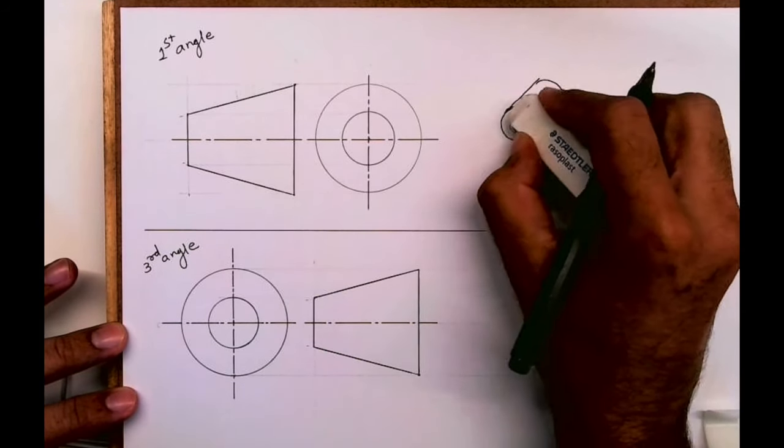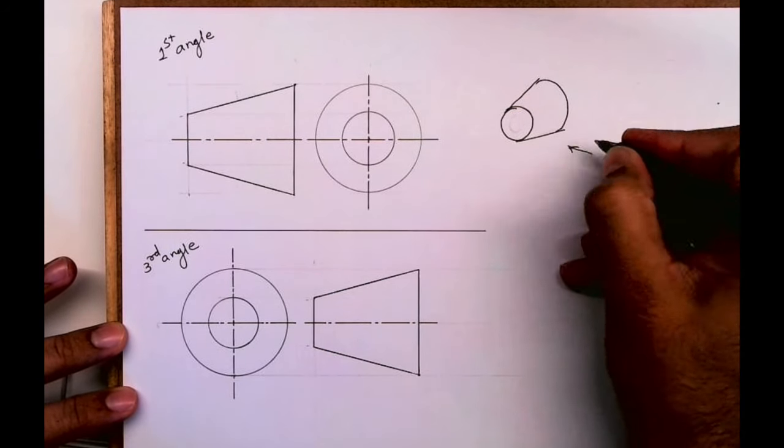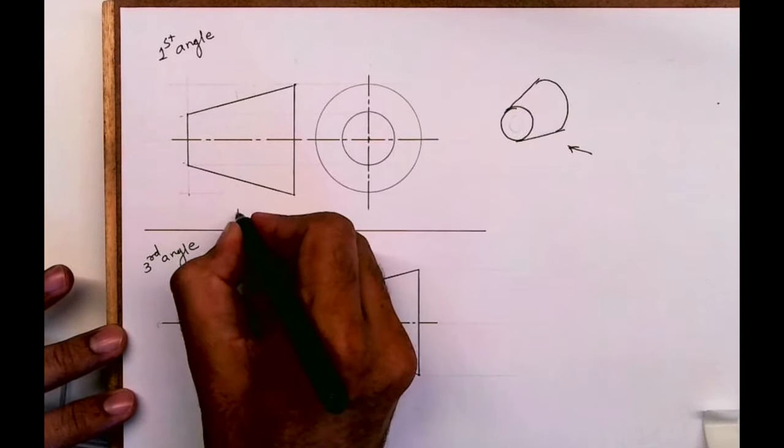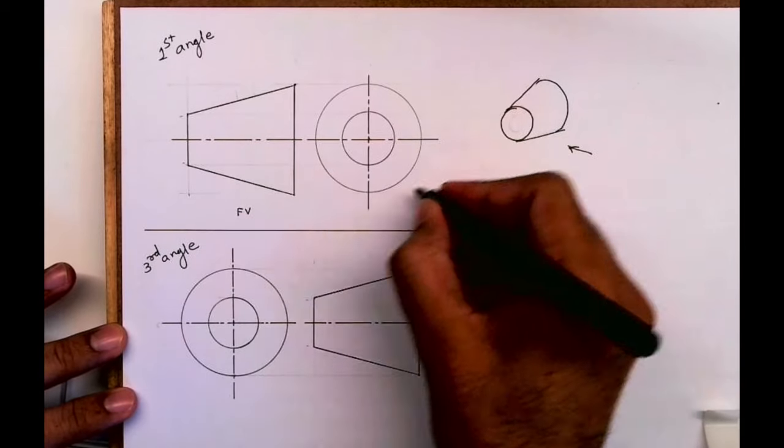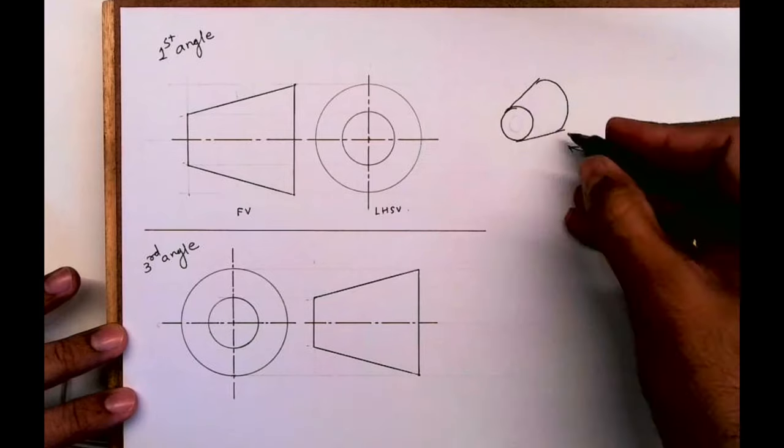Ignore this middle circle that I'm erasing. When you see from here, how does it look? It looks like this trapezium. That is front view. And when you see from the left side, this is how it will look, same way.